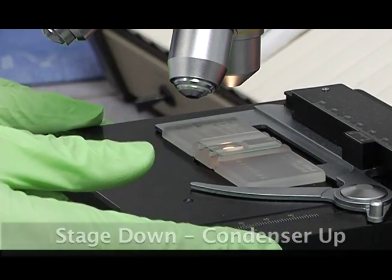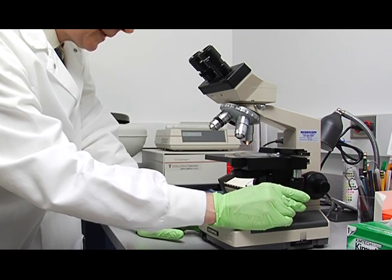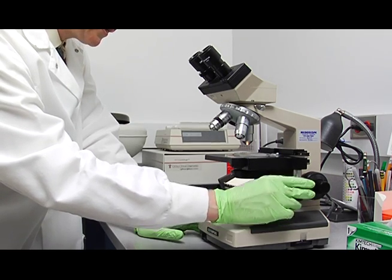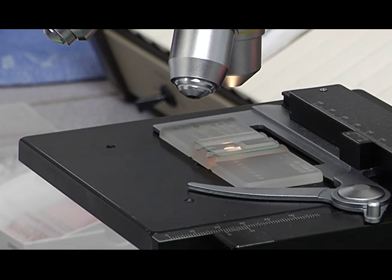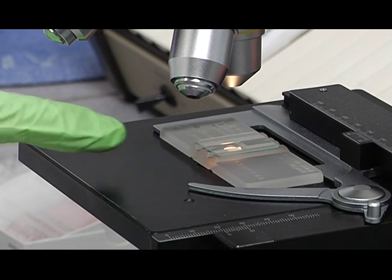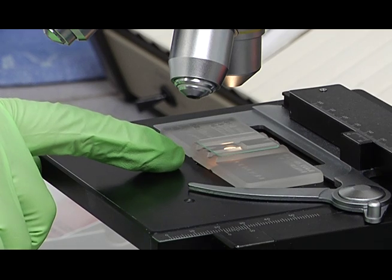Then adjust your stage so that spot of light is right about there on the hemocytometer. That's where your rulings will be showing up.